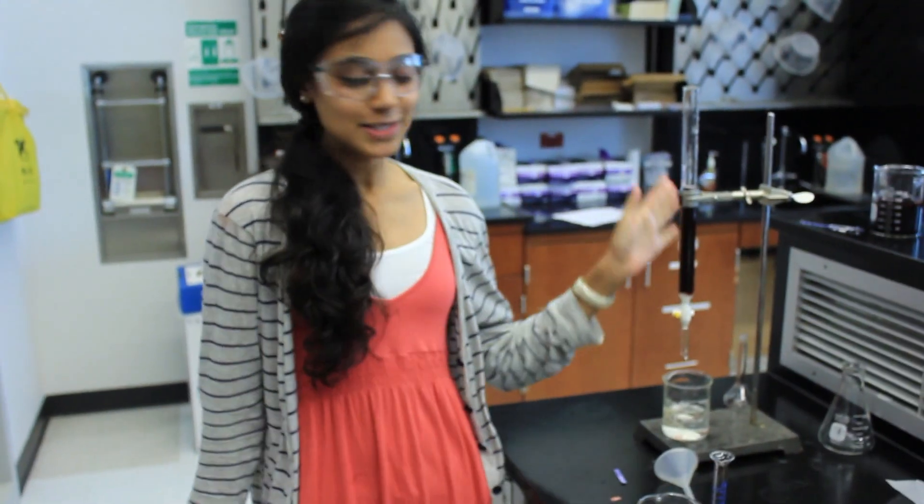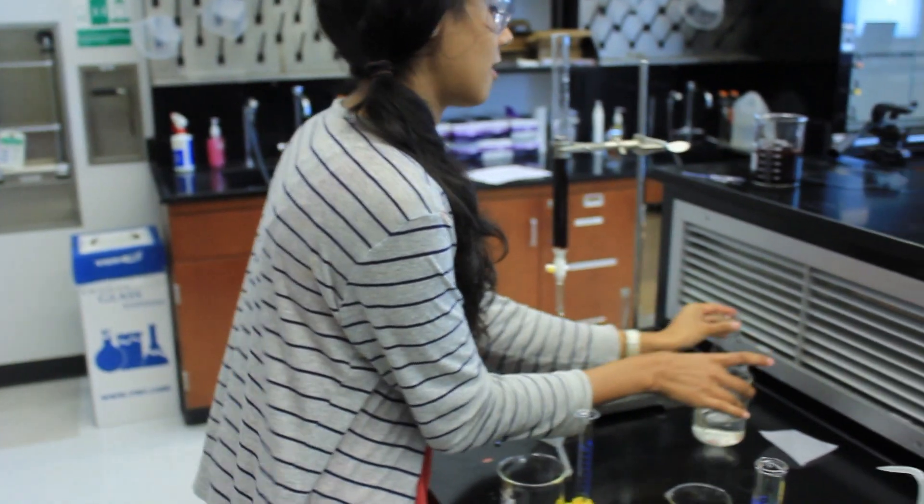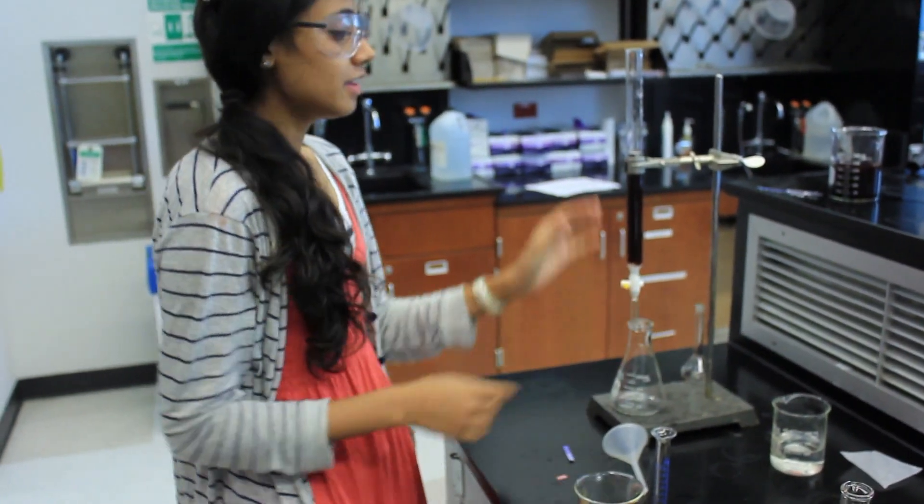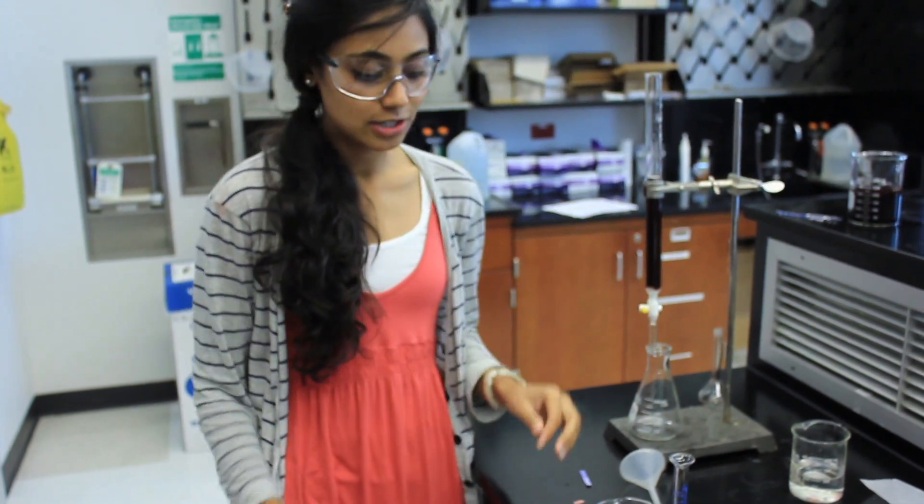Now that our effluent is neutral, we're going to switch from our waste beaker to our Erlenmeyer flask and put it underneath the column. Make sure that the water level is right above the resin slurry when it's neutral.